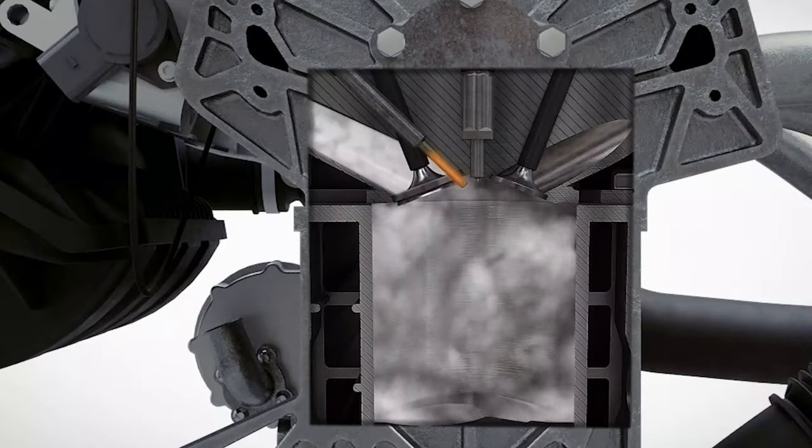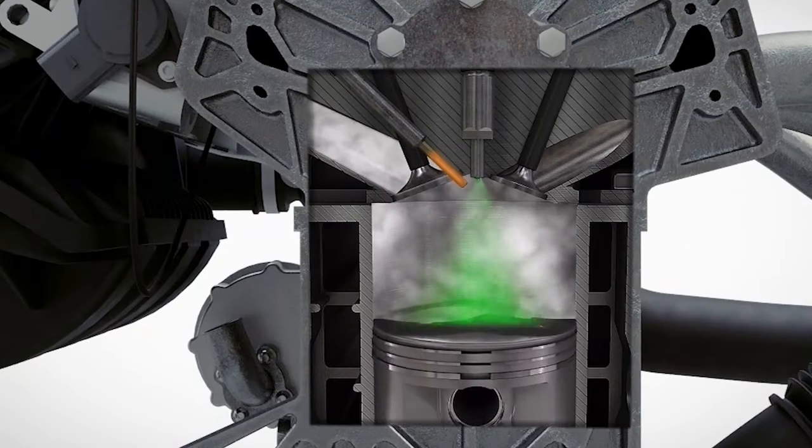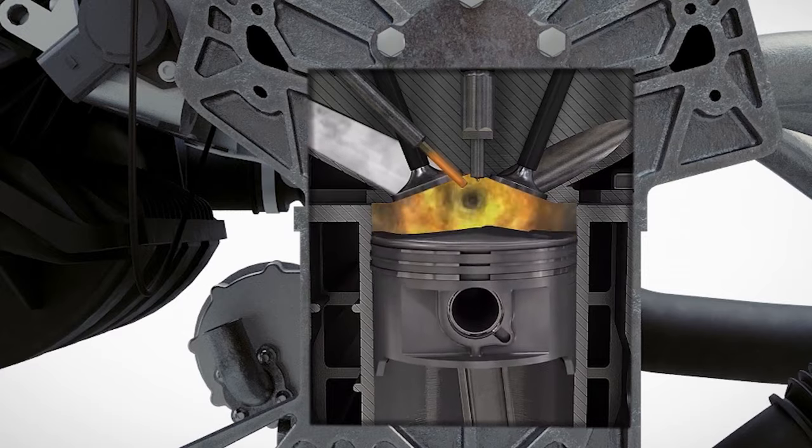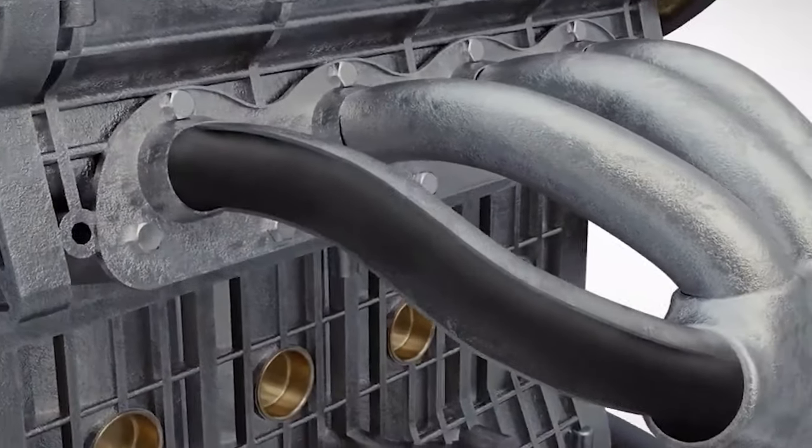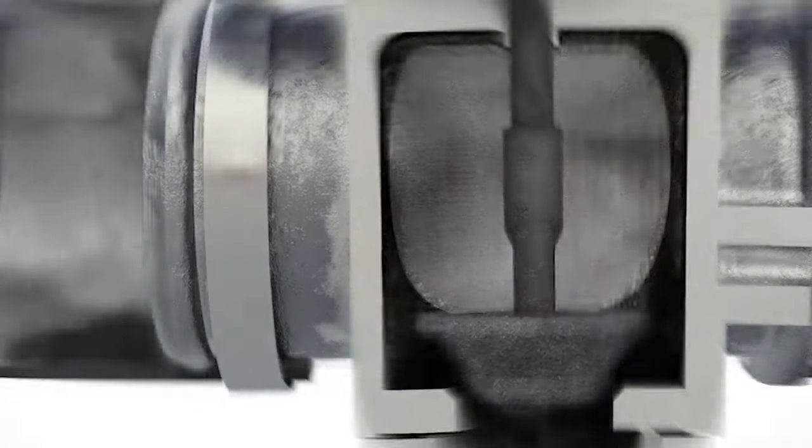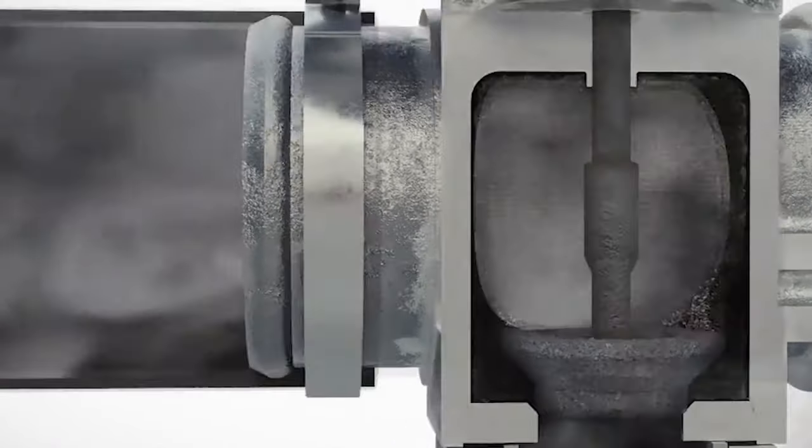The exhaust gas recirculation system reintroduces a small percentage of spent exhaust gas into the engine's intake manifold and combustion chambers. This lowers the combustion temperature, which in turn decreases the emission of nitrogen oxides into the air.